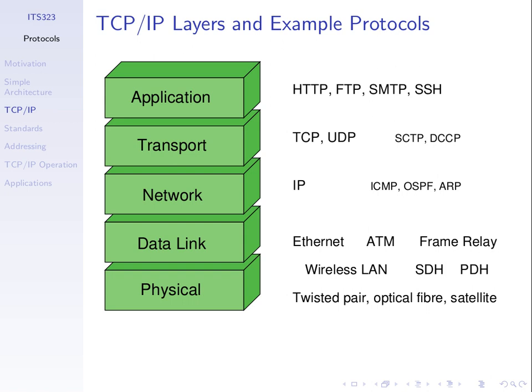We have one layer responsible for one set of tasks, and below that another layer responsible for a different set of tasks, and so on. We combine those layers and the protocols in them to get a protocol stack or protocol architecture. The layers contain protocols related to their set of tasks, but may contain multiple protocols. The example we're using for this course is a protocol architecture with five layers, each containing many different protocols.